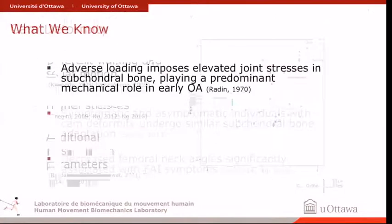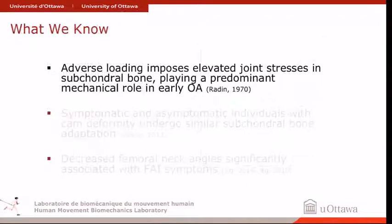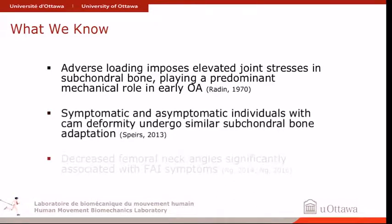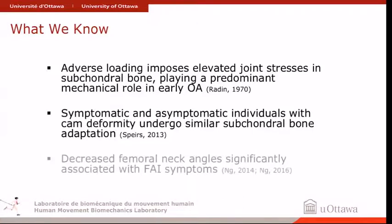What we know from early work by Radin is that adverse load imposes elevated joint stresses that can be predominantly in the subchondral bone, which could play a role in earlier disease. Both symptomatic and asymptomatic individuals can have elevated subchondral bone stiffness, which most likely relates to adaptation from the cam lesion. Decreased femoral neck shaft angles also play a role in terms of the loading of the hip.